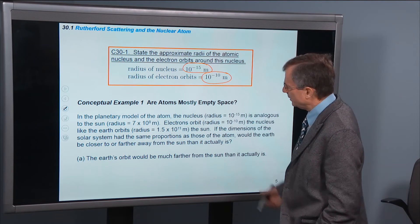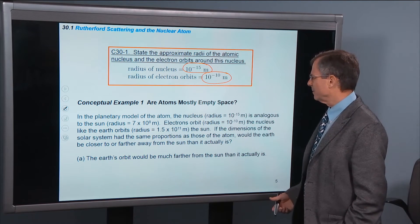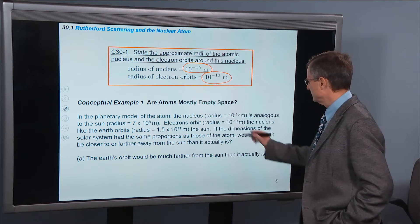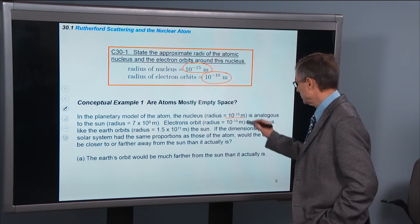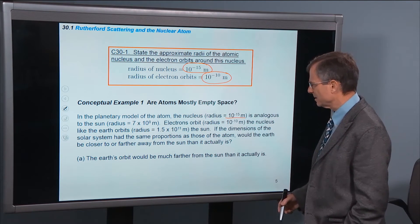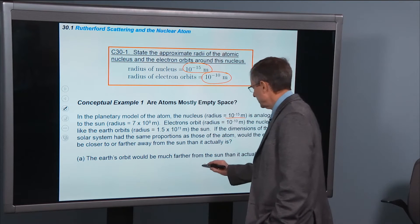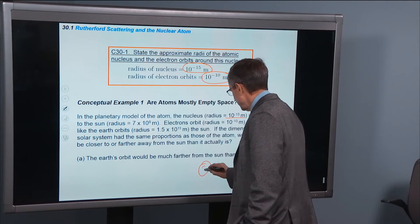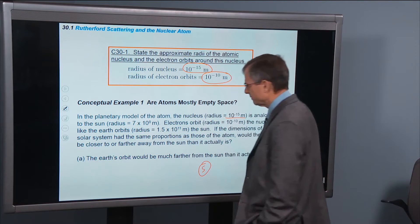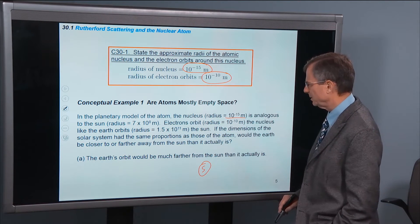Let's do an example. In the planetary model of the atom, the nucleus is analogous to the sun. We have the sun here, and that's what we're thinking about as the nucleus. We're given the radius of the sun as 7 times 10 to the 8 meters.